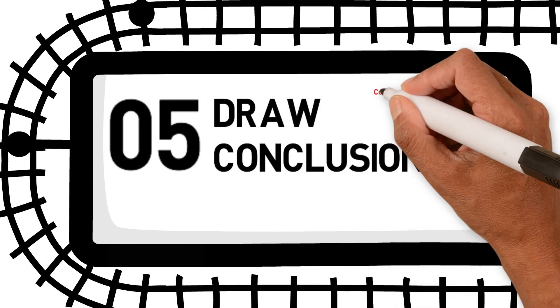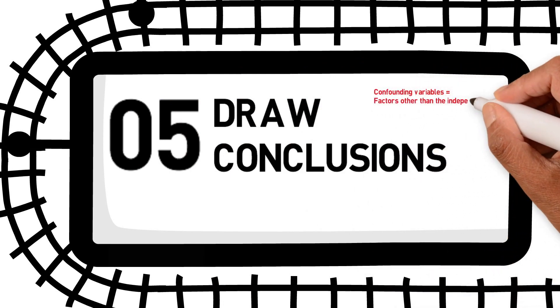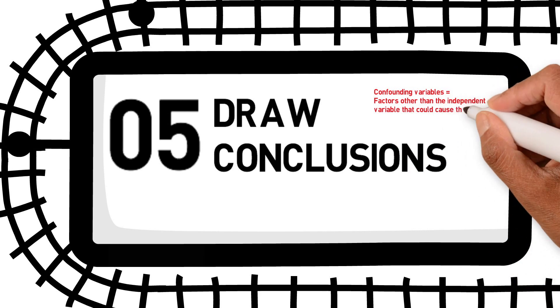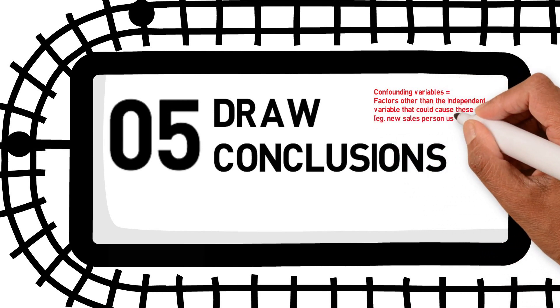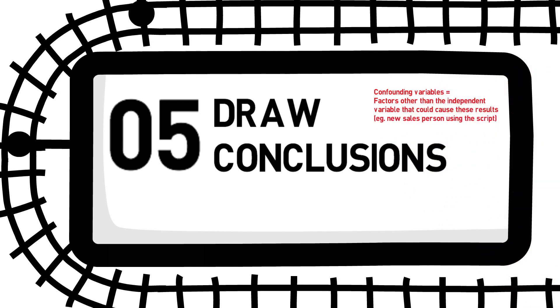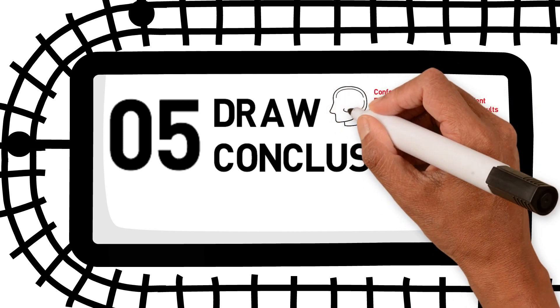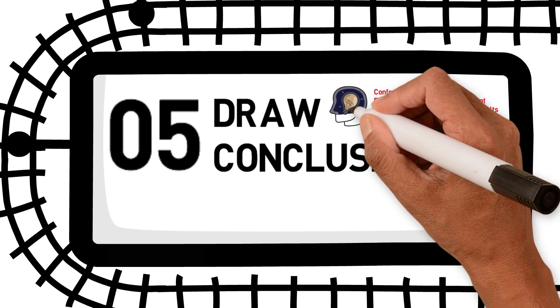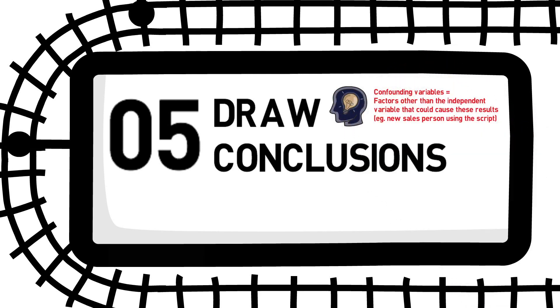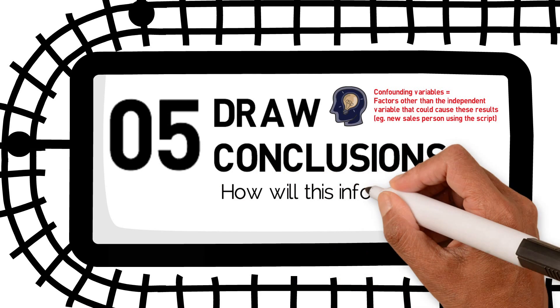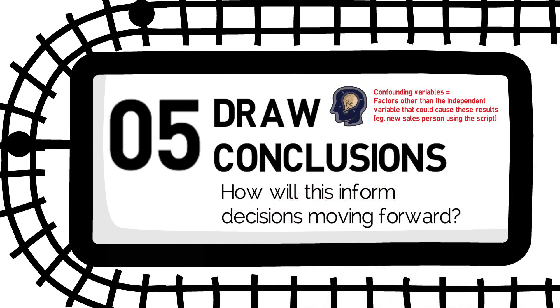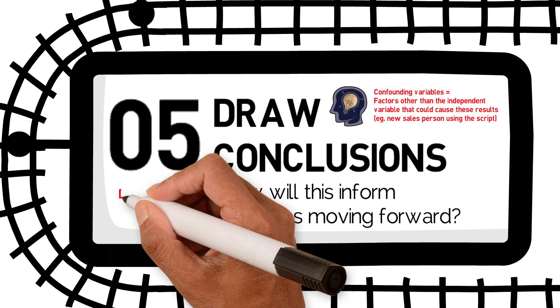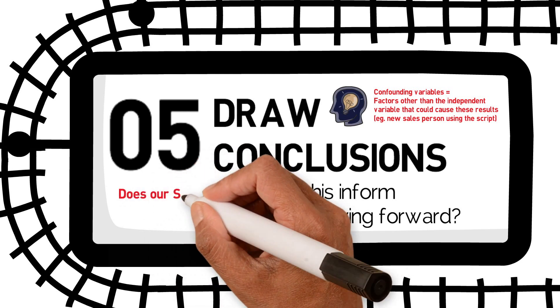Step five is to draw conclusions. Now we've got all this data — what do we make of it? Are there other explanations for what we observed during our experiment? Are there any confounding variables that we didn't consider? And how does this inform what we do moving forward? At the Changemakers, we look at how the experiment we've run informs the related questions we established right at the beginning, and how we can use this information to establish optimal standard operating procedures for your business to keep growing.